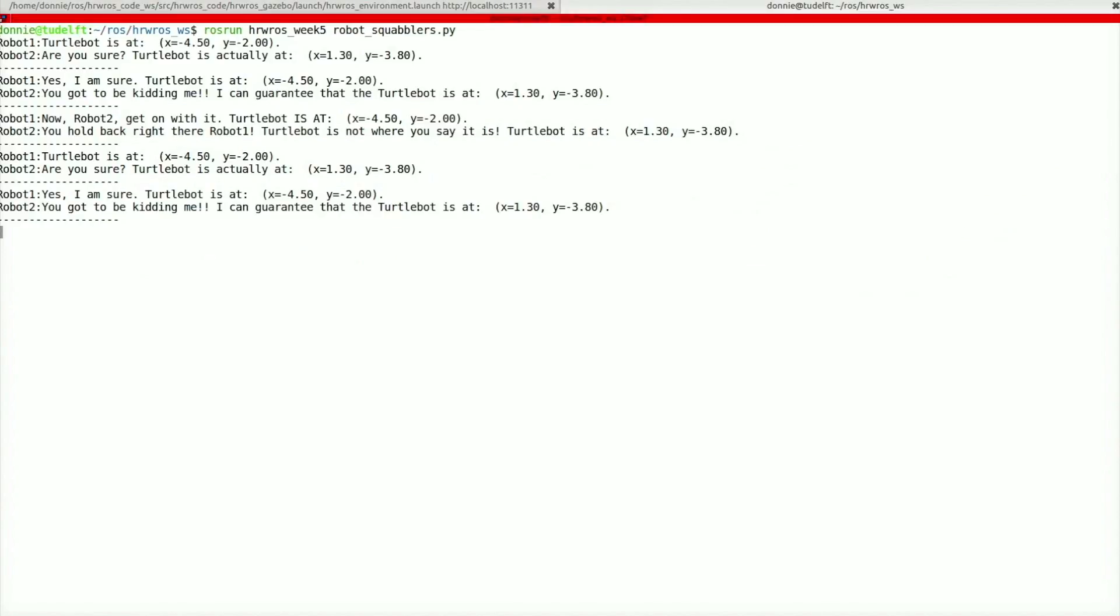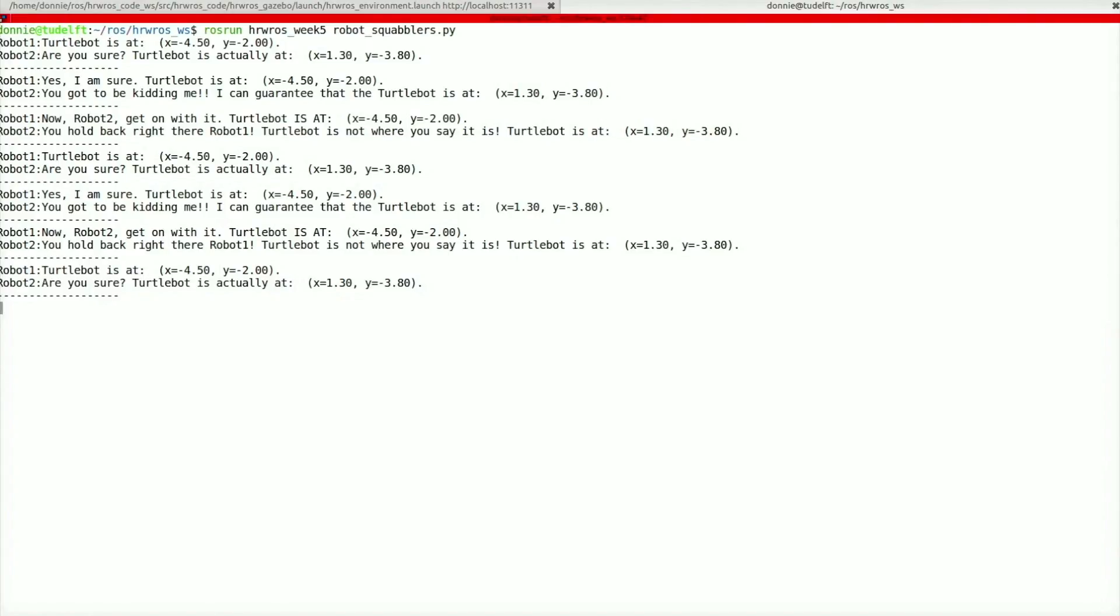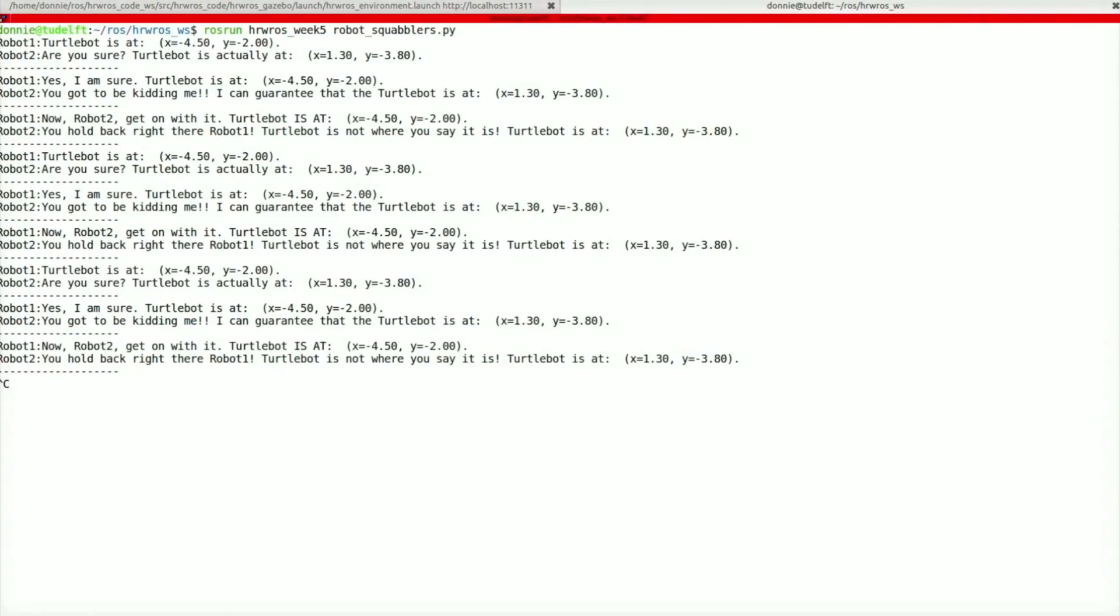Robot 1 says that the xy coordinates of the turtlebot are at minus 4.5, minus 2.0. And robot 2 is saying, no, the xy coordinates of the turtlebot are at 1.3 and minus 3.8. And as this argument rages, TF comes to the rescue.